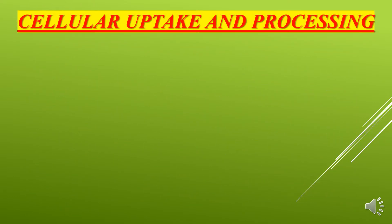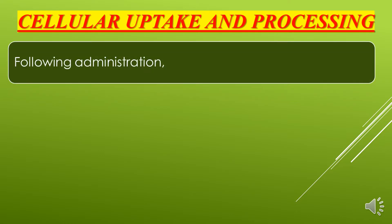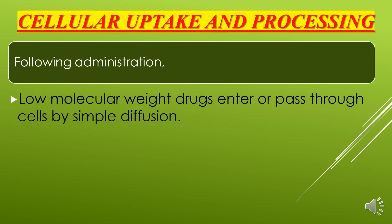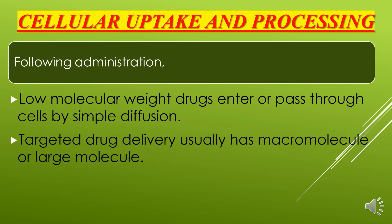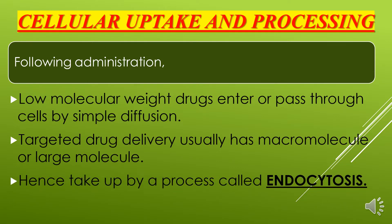Cellular uptake and processing: Following administration, low molecular weight drugs enter or pass through cells by simple diffusion — the movement of molecules from a region of high concentration to low concentration. Hence, no energy is required for the drug molecule to cross the cell membrane. But in targeted drug delivery, there are usually macromolecules or large molecules. Large molecular drugs cannot enter by simple diffusion and are hence taken up by a process called endocytosis.